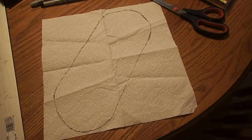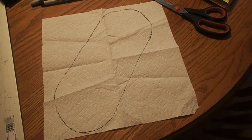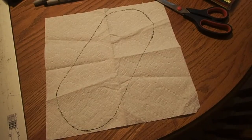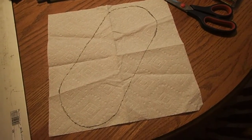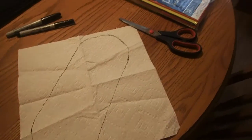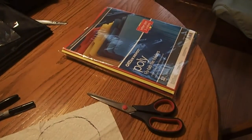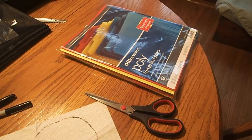So the first thing that I'm going to do is I'm going to cut out the template that I made on the paper towel so that I can trace it onto the plastic of the poly file folders.